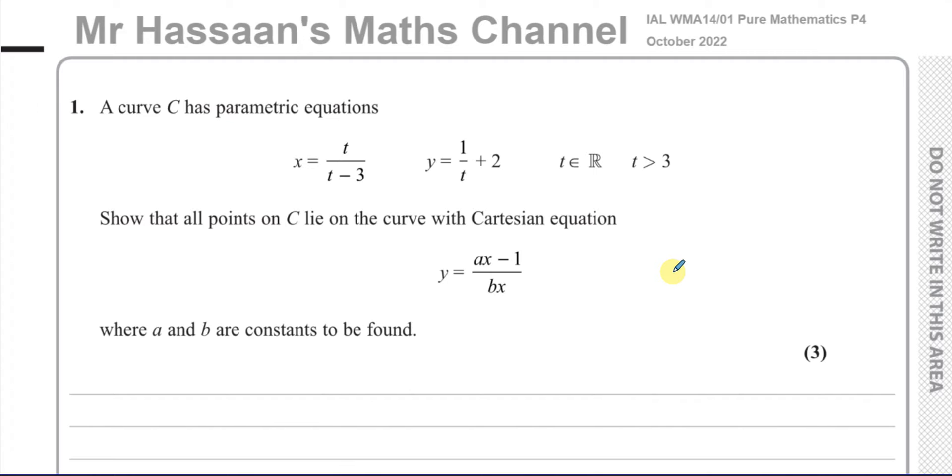So in order to do this, what we have to do is in one of these equations make t the subject and replace that t in the other equation so that you eliminate the t. From first glance it seems like it would probably be easier for me to make t the subject from this equation here so I only have to substitute in one place.